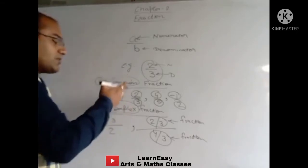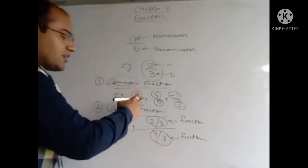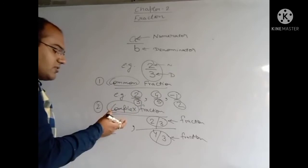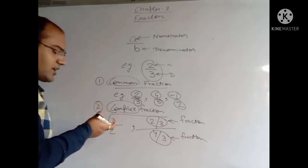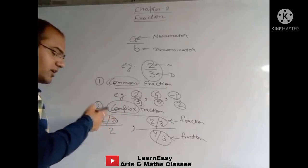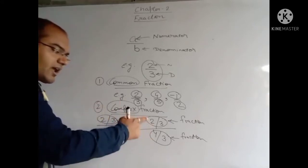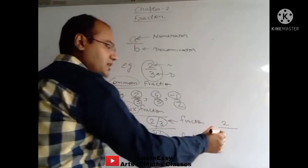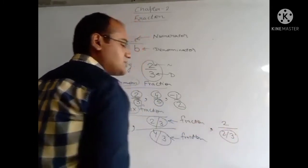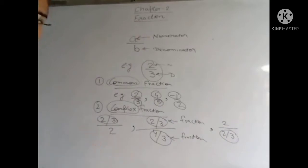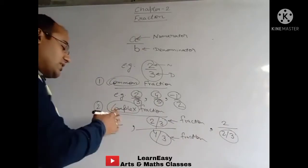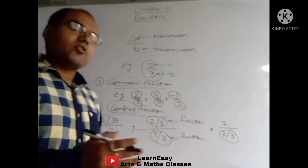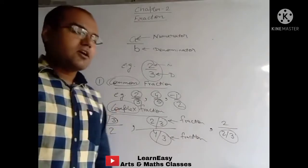What is the difference between Common Fractions and Complex Fractions? In Common Fractions, both numerator and denominator are integers. But in Complex Fractions, either the numerator or denominator will not be integers — it will be a fraction. In one example, both numerator and denominator are fractions. In another example, the numerator is an integer but the denominator is a fraction. Such fractions are known as Complex Fractions.